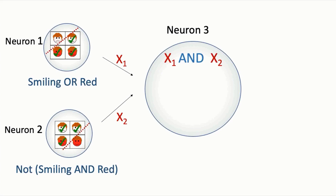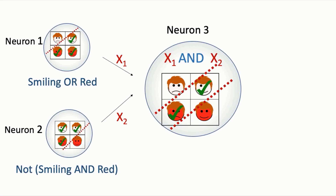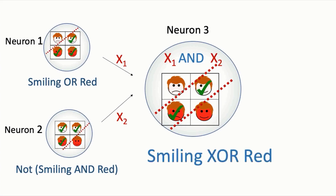When the face input satisfies both neuron 1 and neuron 2's criteria, neuron 3 computes an AND operation on their outputs and thereby represents the XOR problem. Neuron 3 will detect faces that are either smiling and not red, or red and not smiling, and nothing else. Neuron 3 finds its own values of two weights and a bias — weight 1 multiplies the input from neuron 1, weight 2 multiplies the input from neuron 2 — and performs the same computation: sum weighted inputs, add bias, feed through an activation function.